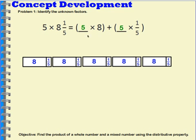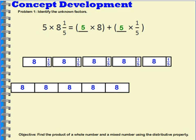then we needed to multiply each of our parts by five. So when I multiply eight times five, my tape diagram looks like this. And when I multiply one-fifth times five, my tape diagram looks like this.